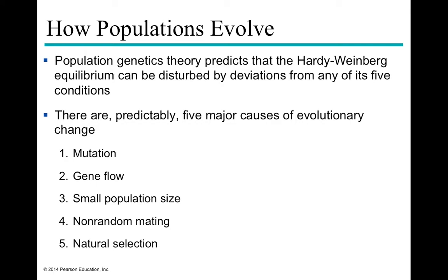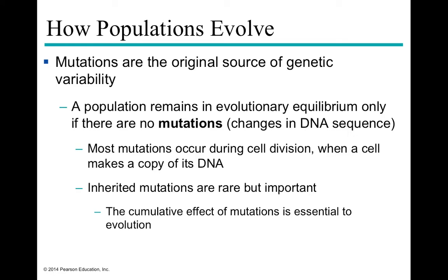Small population sizes mean the death of one individual can drastically change allelic percentages. Non-random mating is a major cause of selective pressure — mate selection over time can favor taller, smarter, or stronger individuals, or traits like larger beaks in toucans or elaborate feathers in peacocks. Natural selection is any selective pressure from the environment that causes one individual to have better chances of reproductive success over another.